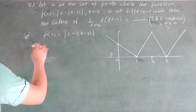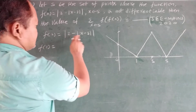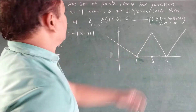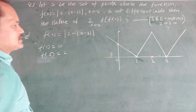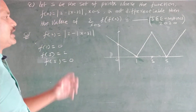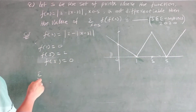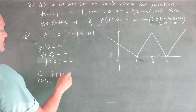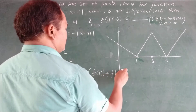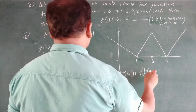Now we have to find f(f(x)) at each non-differentiable point. f(1) = 0, f(3) = 2, f(5) = 0. So Σ(x∈S) f(f(x)) = f(f(1)) + f(f(3)) + f(f(5)), which equals f(0) + f(2) + f(0).